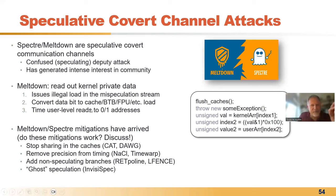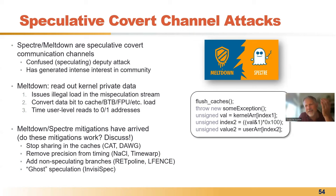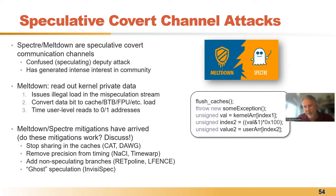I'm going to show specifically Meltdown. Meltdown performs a speculation attack — not on branches, but on whether or not an instruction had an exception. This is in essence a control speculation because if the exception was known, we would have gone to the exception handler right away. But since exceptions are typically detected at commit time, the code continues executing as if there were no exception. This particular exception has to do with how Linux arranged the address space.